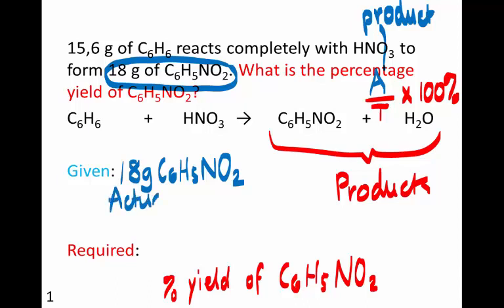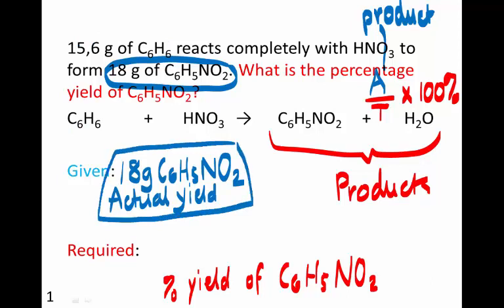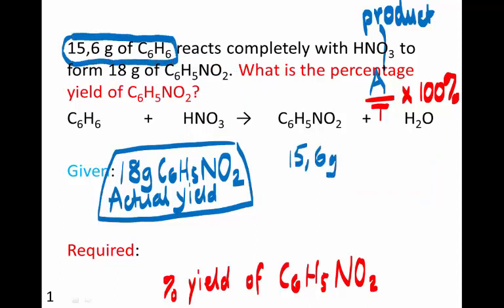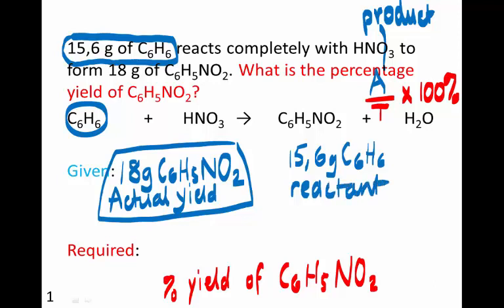18 grams of C6H5NO2 is the actual yield, because it's a product. The other piece of information — 15.6 grams of benzene — is not actual yield and not theoretical yield; it's the mass of a reactant. You are going to use that reactant mass to find the theoretical yield that you're missing.